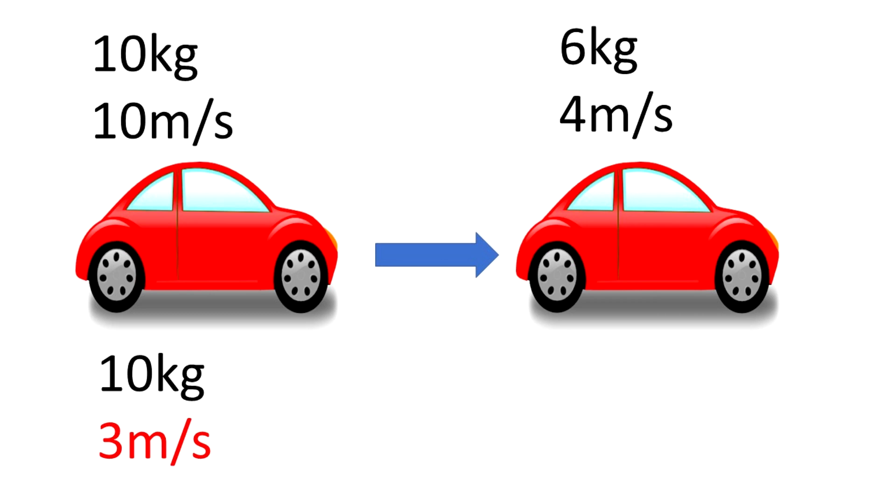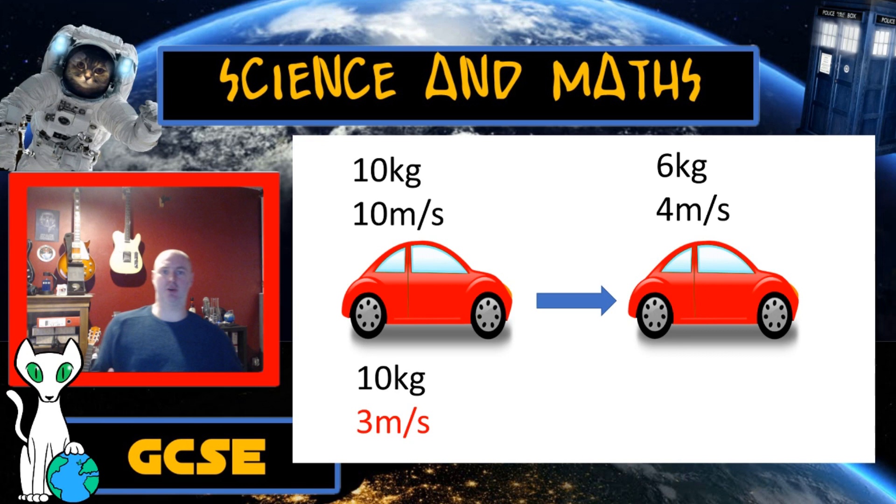Seriously, pause the video and then press play again either when you've got an answer and you want to see if you're right or if you give up. So this question is of course all to do with the idea of conservation of momentum. We know that the car that's on the left, the car that's doing the striking, is going to slow down and lose momentum, and we should know that that momentum is going to be transferred to the car that it strikes, the car on the right.